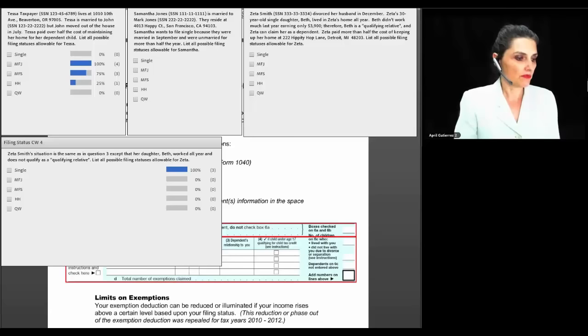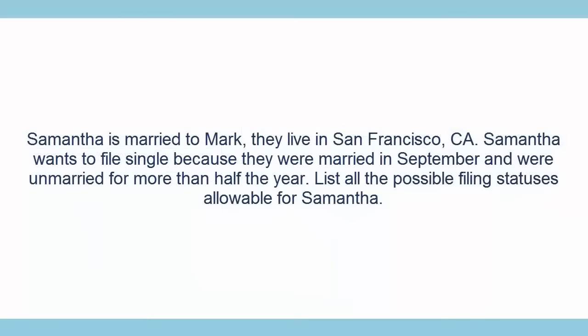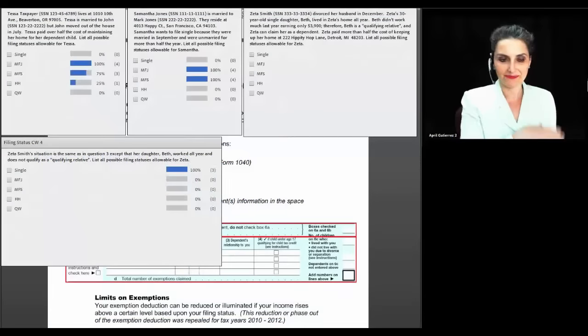Next question: Samantha is married to Mark and they live in San Francisco. Samantha wants to file single because they were married in September and were unmarried for more than half the year. List all possible filing statuses. Married filing joint and married filing separate are the only options available. Single is not allowed.